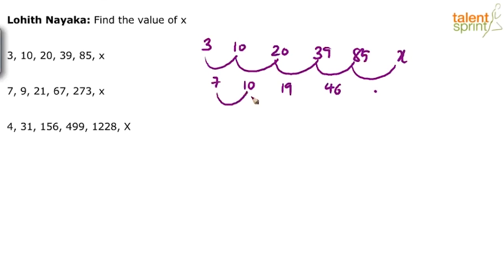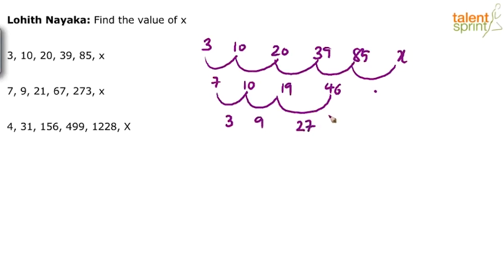Looking at the second-level differences — 7 and 10: the difference is 3. 10 and 19: the difference is 9. 19 and 46: the difference is 27. So we have 3, 9, and 27.